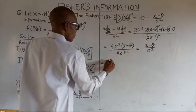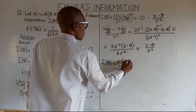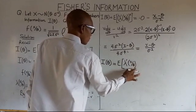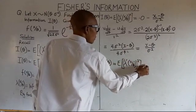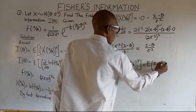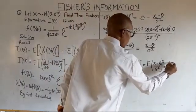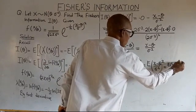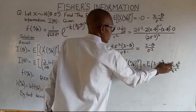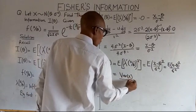So the first derivative of the log-likelihood is (x minus theta) over sigma squared. For the Fisher information using the first derivative method, we take the expected value of this quantity squared: the expected value of (x minus theta) squared over sigma squared — all of that squared.